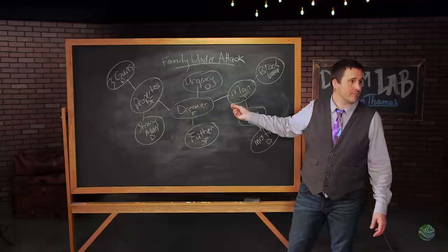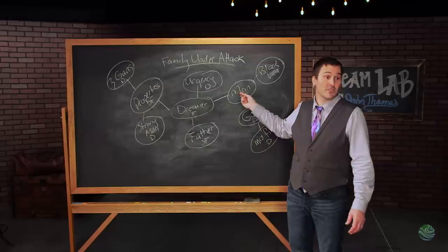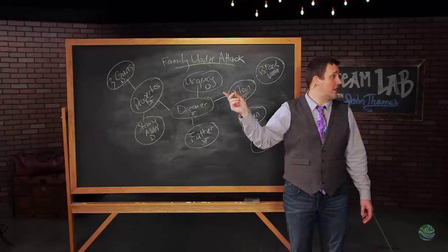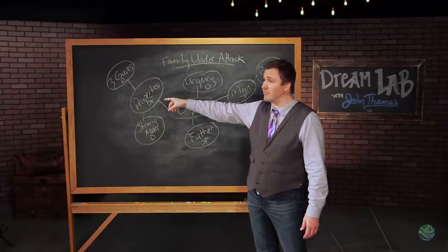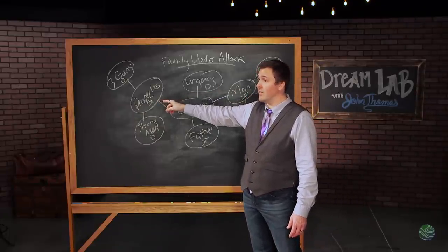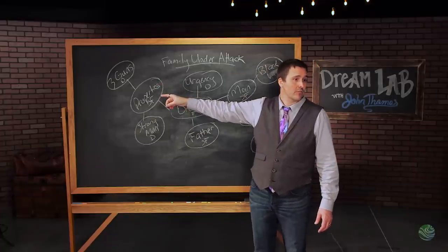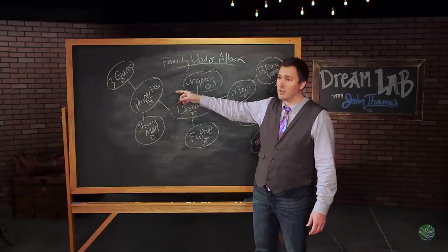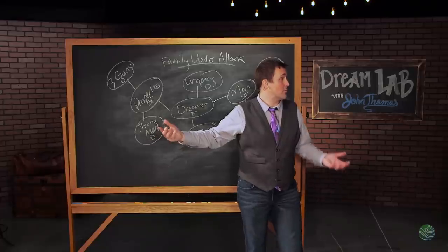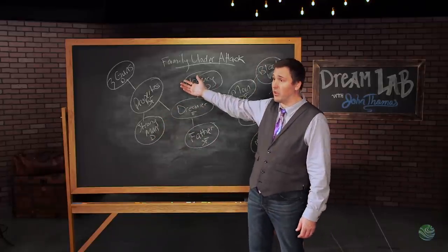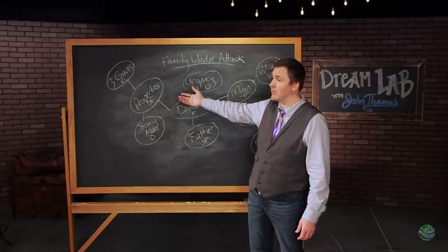Who's the man? The intruder. It's an enemy, it's a demonic attack, right? A demonic attack against the family line. There's the guns, three guns on the back porch. Guns represent authority. So there's authority to deal with it, but it's not ready, it's not prepared.